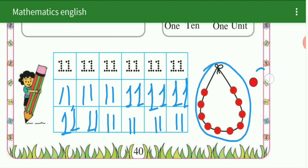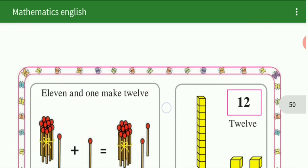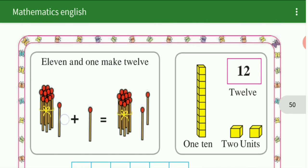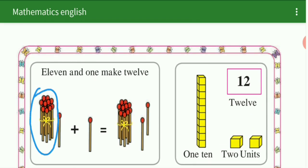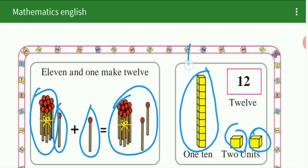10s plus one — यह कितने हैं? 10s plus one is equal to 11. सेम 12 की स्टोरी है — 11 and one make 12. See here: 11, मतलब 10 plus one is 11. 11 plus one is 12. See here — 10 boxes plus 2 is equal to 12.